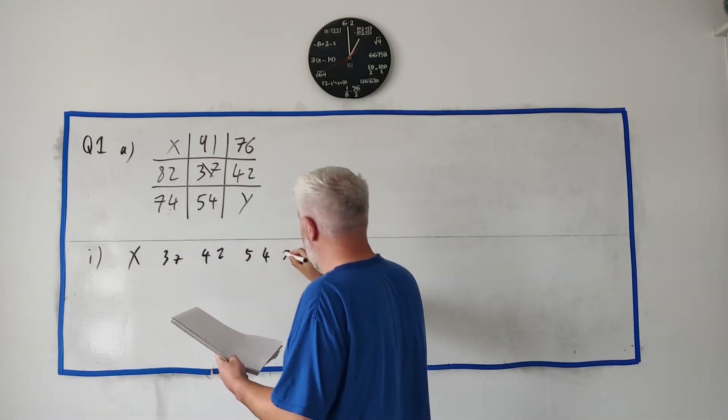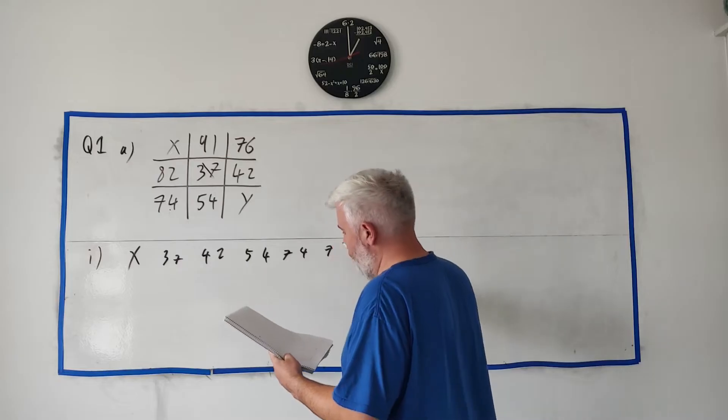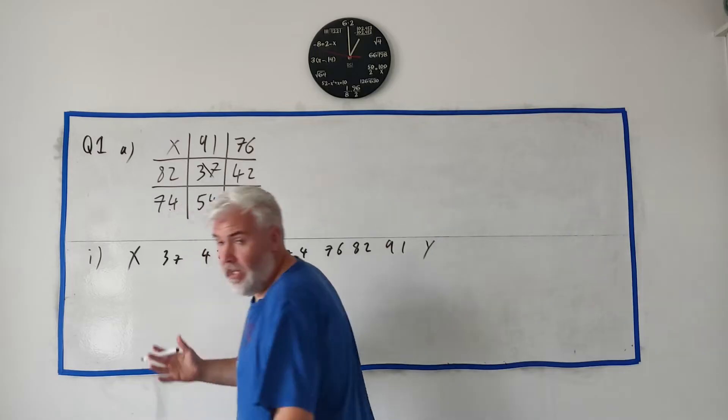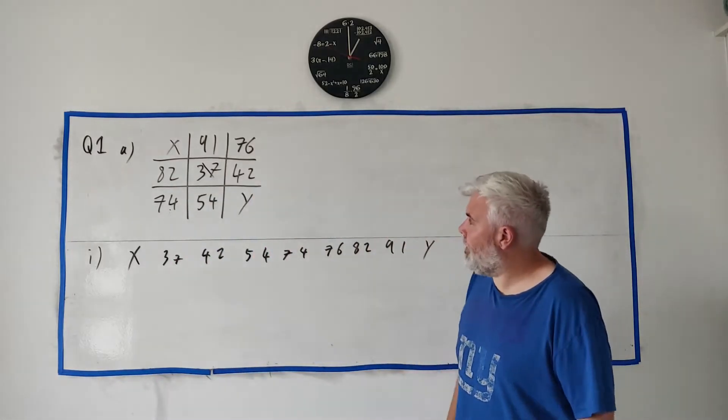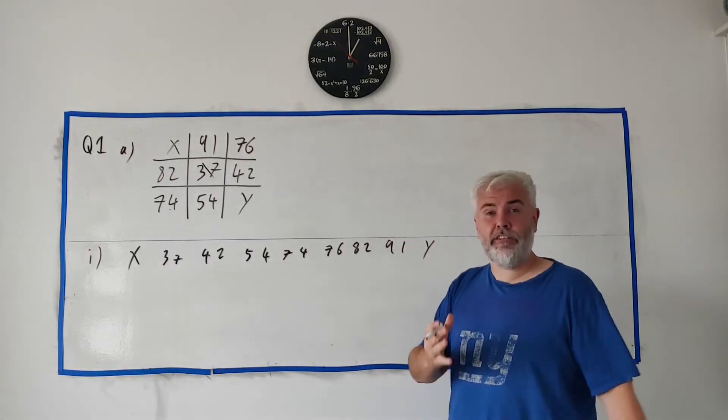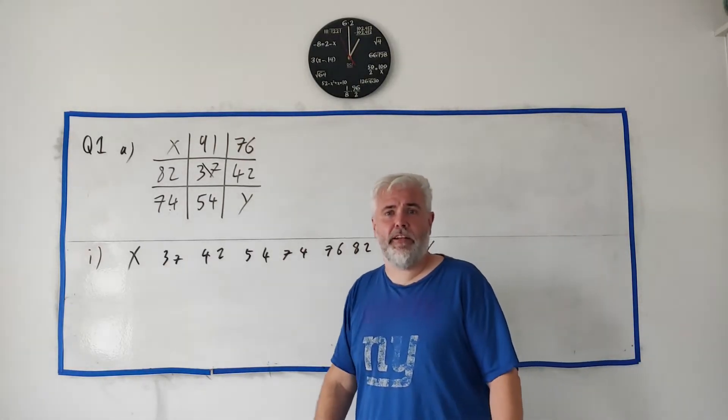54, 74, 76, 82, 91 and Y. That's it, you're getting marks for writing out numbers in order. Just be careful, go through it slowly. It is easy but that doesn't mean you can't make mistakes. I might have made a mistake there.